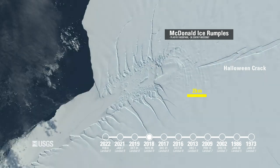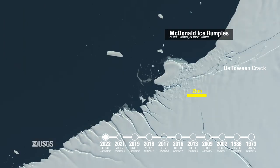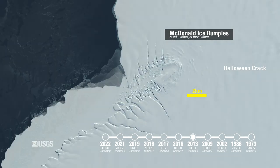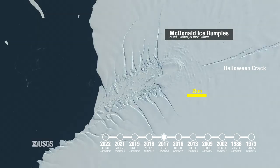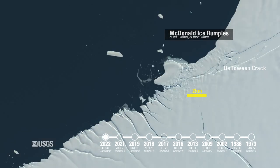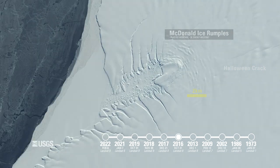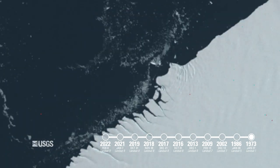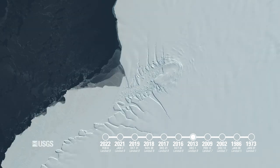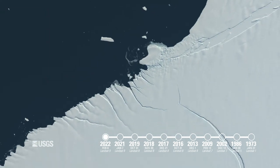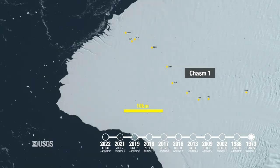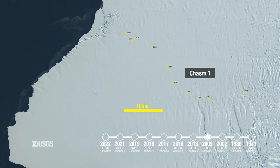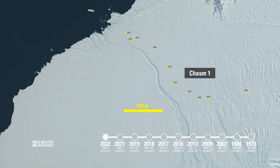Through this Landsat time series, the feature that causes the rumples remains stationary while the ice shelf and its rifts flow west. In recent years, a prominent rift named Chasm One has approached close to the McDonald Ice Rumples.